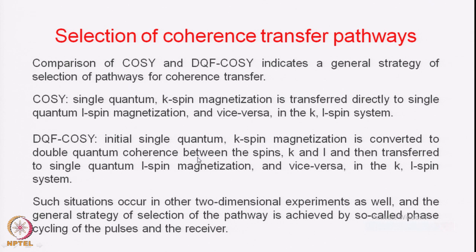We use a strategy called phase cycling where the phase of the pulses is cycled as X, Y, minus X, minus Y for the same T1 increment and the receiver phase is appropriately adjusted, so that other components — the single quantum and Z magnetization — are eliminated and only the double quantum coherence is preserved. Since the double quantum signal is not observable, it has to be converted into observable magnetization by the third pulse in the DQF-COSY pulse sequence.